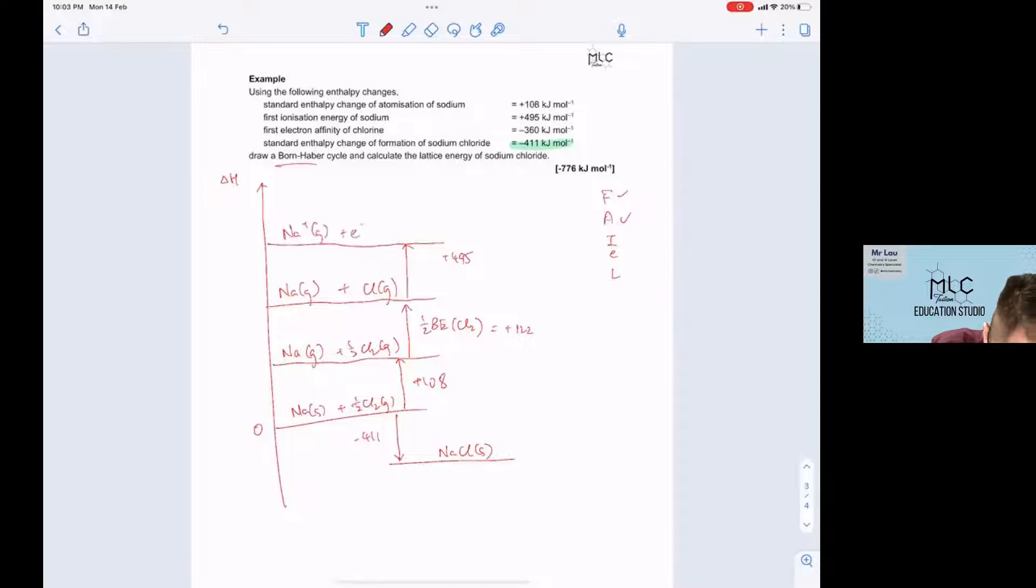Next let's look at the first EA of chlorine. It's negative so your arrow must now move down. So this is minus 360 and you will get Na plus gas and Cl minus gas.